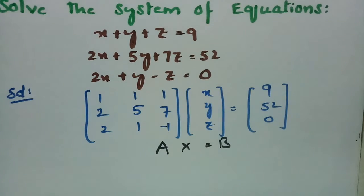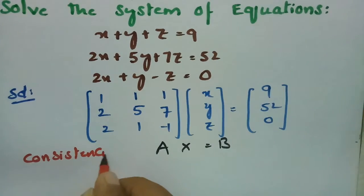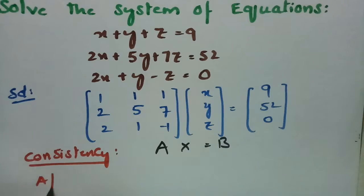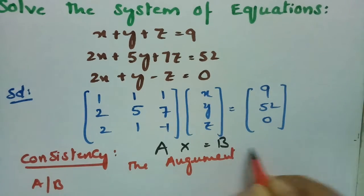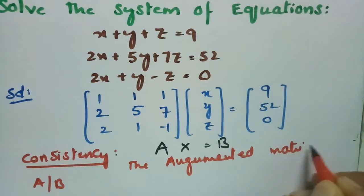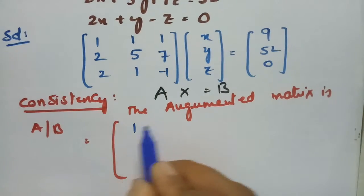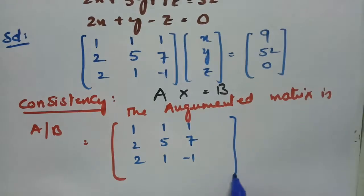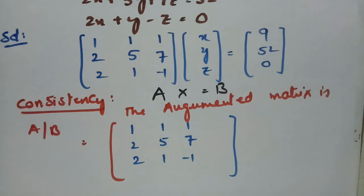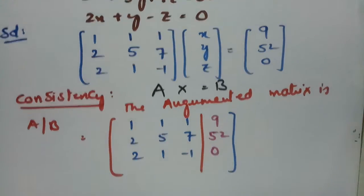In order to check consistency, we have to frame an augmented matrix. The augmented matrix [A|B] is written by combining matrix A with column B, giving us rows: 1 1 1 | 9, then 2 5 7 | 52, and 2 1 minus 1 | 0, with a partition separating A and B.